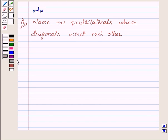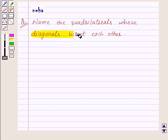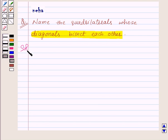Hi and welcome to the session. I am Neha and today I will discuss the following question with you. The question says: name the quadrilaterals whose diagonals bisect each other. So let's see its solution. Now let us name the quadrilaterals whose diagonals bisect each other.